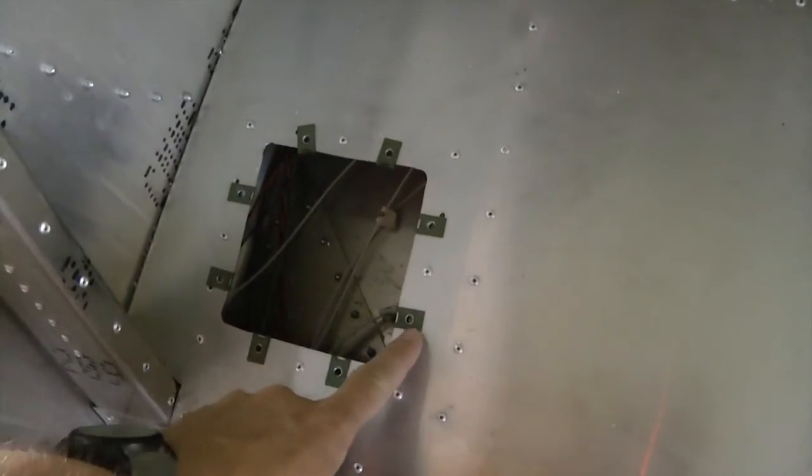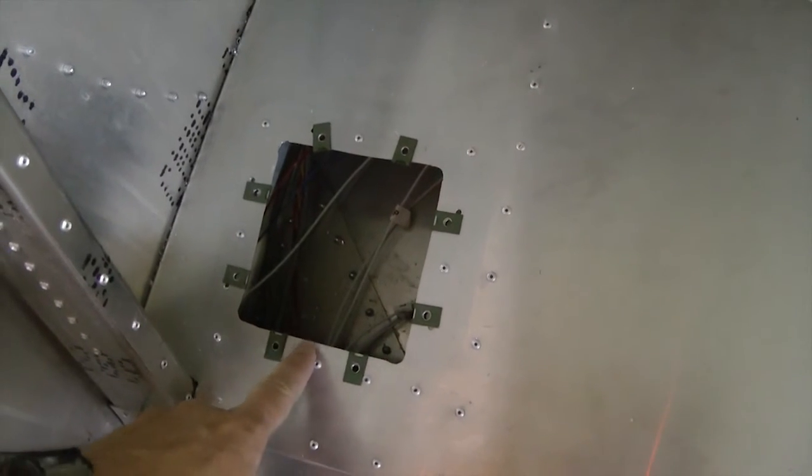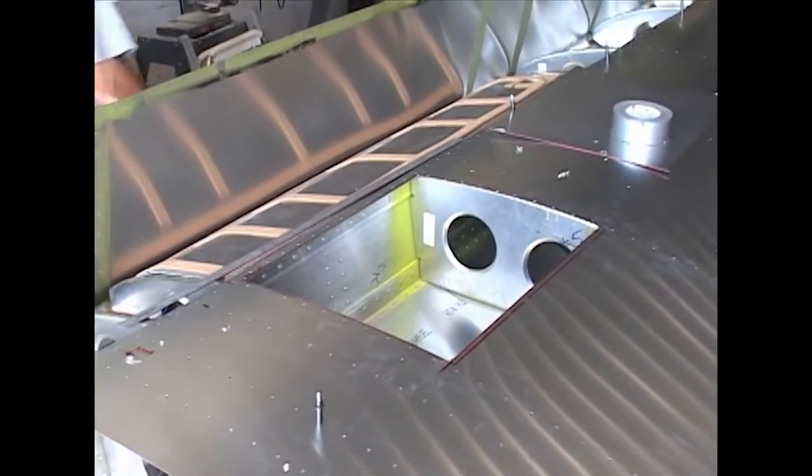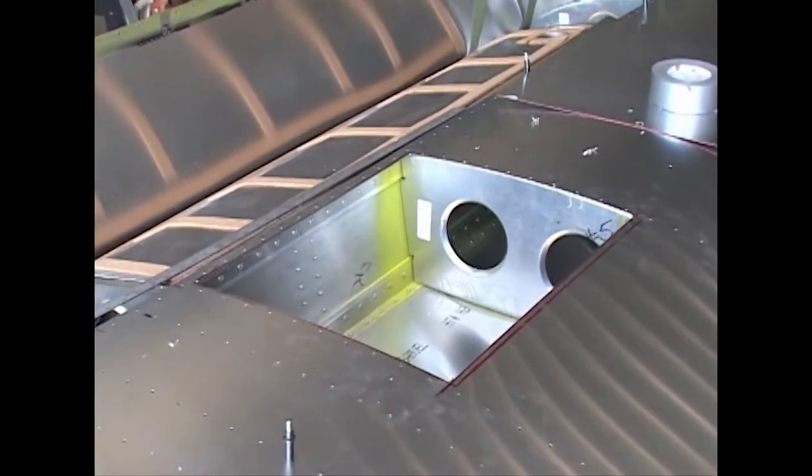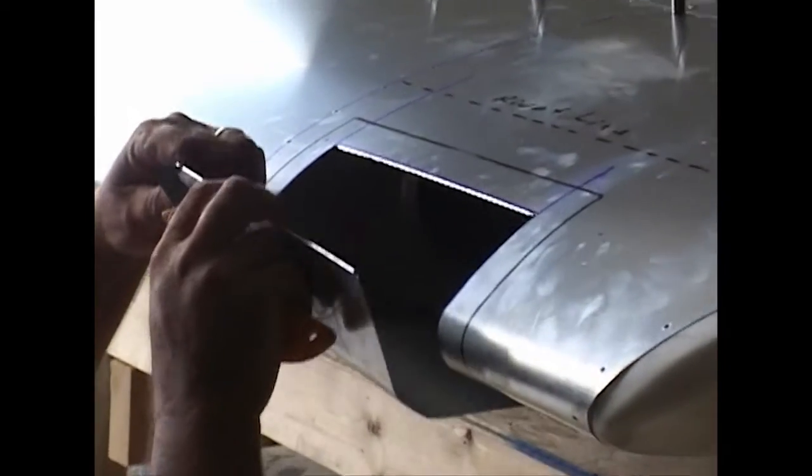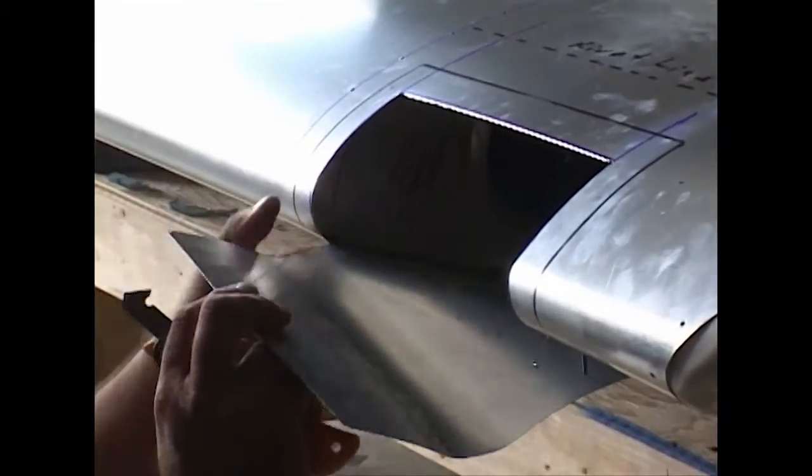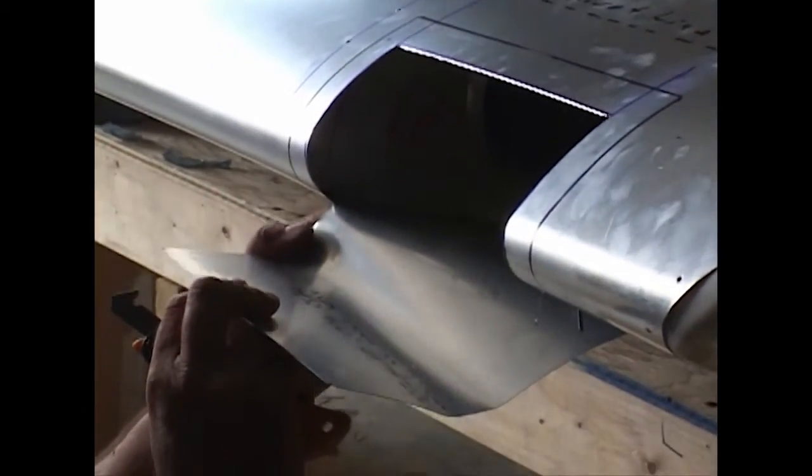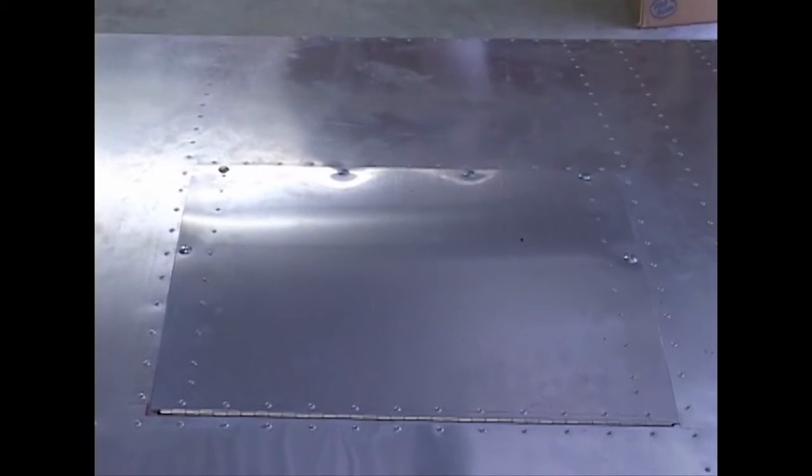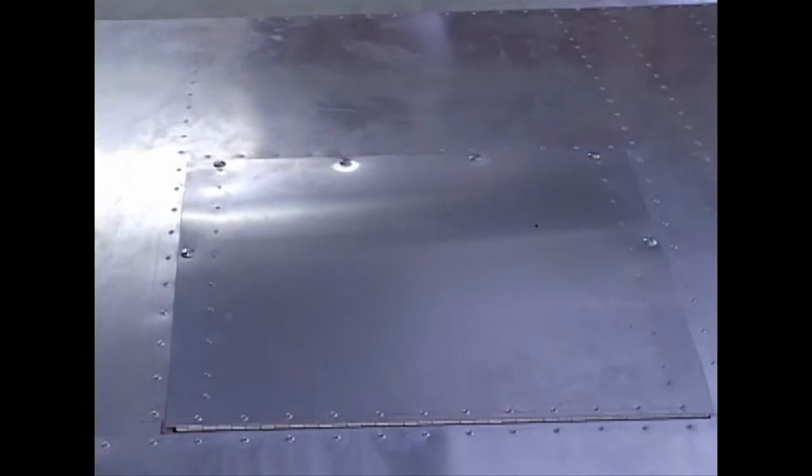Creating cutouts or openings in our metal skinned aircraft is a common and important skill for any metal aircraft builder. Typical needs for these openings are for access panels, landing lights, and in our presentation here, a wing storage locker. The cutouts need to be precise in both their size and location.